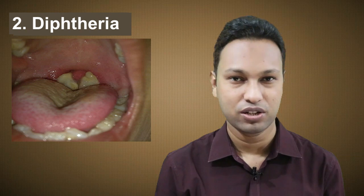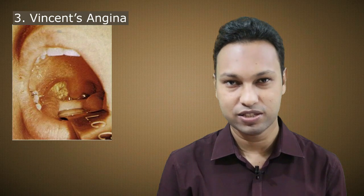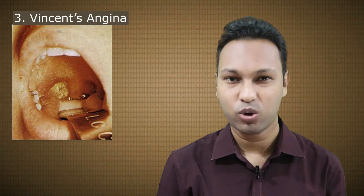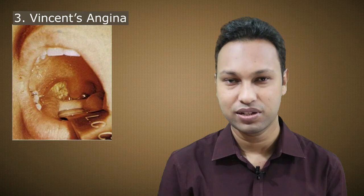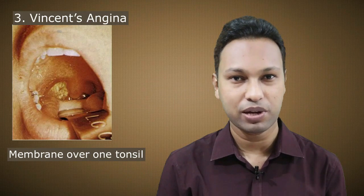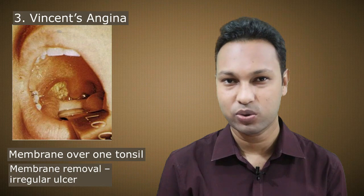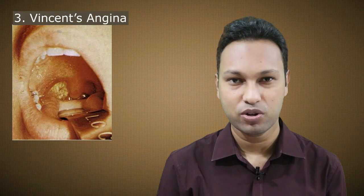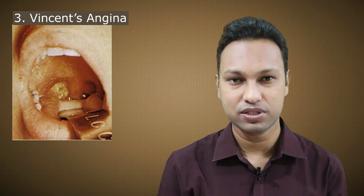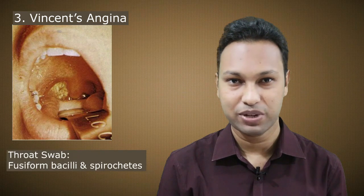Number three is Vincent's angina. It is insidious in onset with less fever and less local discomfort. A membrane is found usually on one tonsil, and removal of the membrane exposes an ulcerative, irregular lesion. Throat swab will show the causative organisms, which are spirochetes and fusiform bacilli.